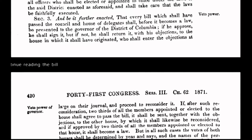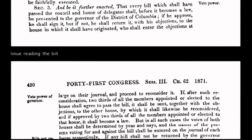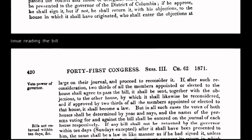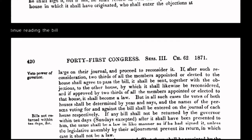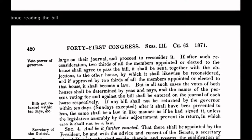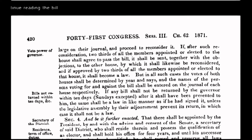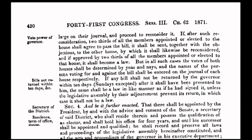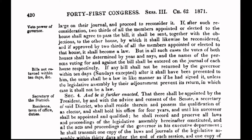Instead of having absolute and unalienable rights guaranteed under the organic constitution, we the people now have relative rights or privileges. One example is the sovereign's right to travel, which has now been transformed under corporate government policy into a privilege that requires citizens to be licensed — an example would be passports. By passing the Act of 1871, Congress committed treason against the people who were sovereign under the grants and decrees of the Declaration of Independence and the organic constitution. The Act of 1871 became the foundation of all the treason since committed by government officials. The United States isn't a country — it's a corporation.